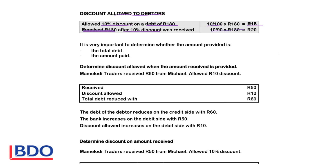It is very important to determine whether the total debt or the amount paid is provided. Mama Lordi Traders received 50 Rand from Michael and allowed 10 Rand discount. The total amount received was 50 Rand. In addition, the business allows 10 Rand discount, so we will reduce his account with 60 Rand.